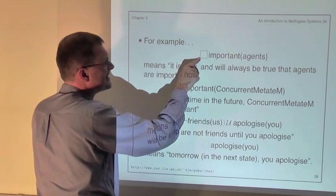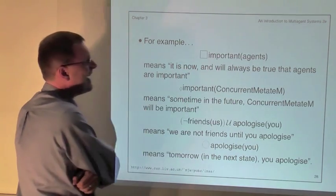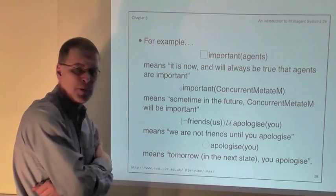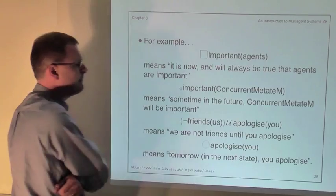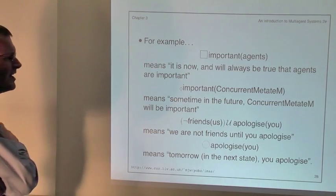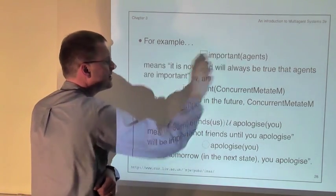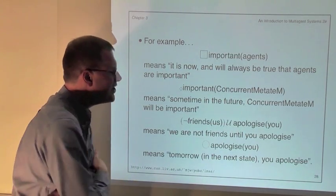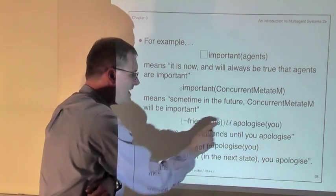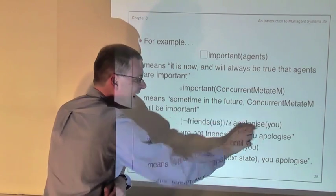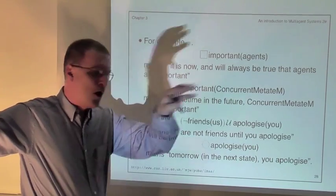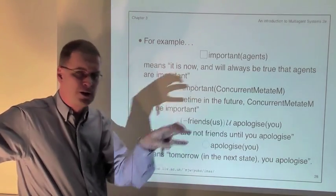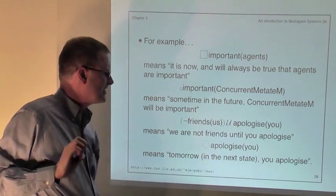So we read the box formula as 'it is now and always will be the case that agents are important,' and the diamond formula as 'at some point in the future it will be the case that Concurrent MetateM is important.' These are unary operators — they take a single argument. The binary operator U stands for until: the right-hand side is eventually true, and all the time points until then the left-hand side is true.